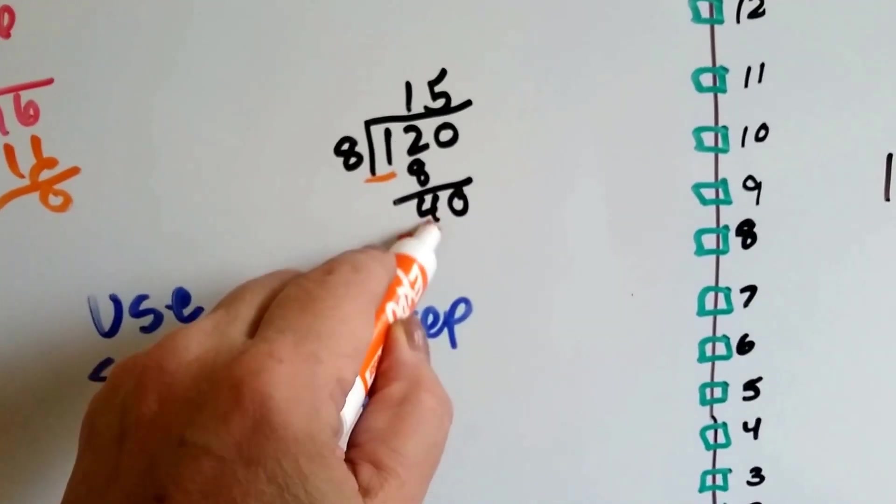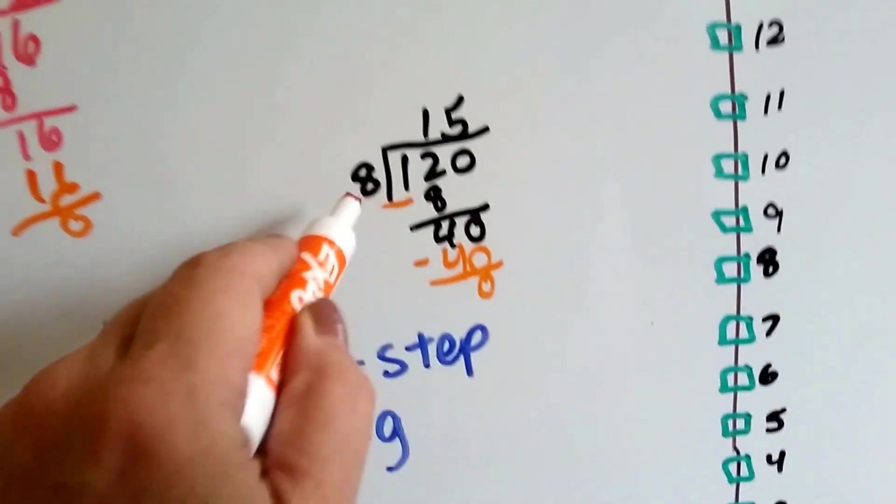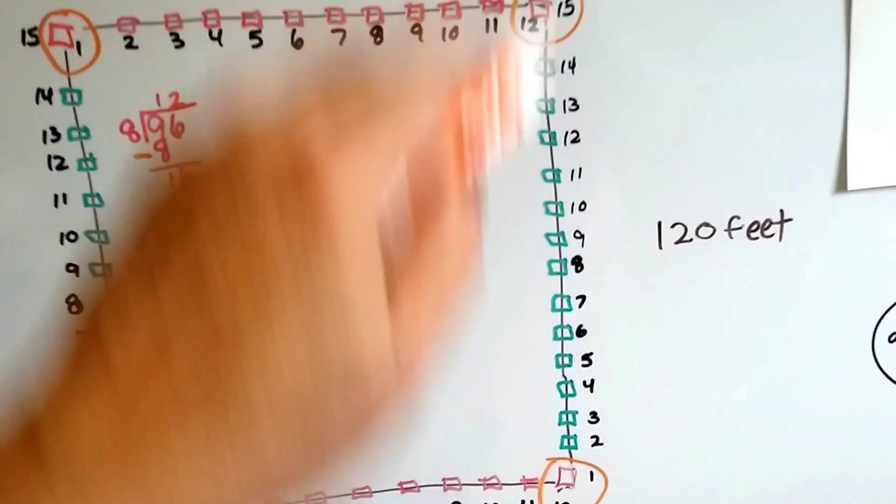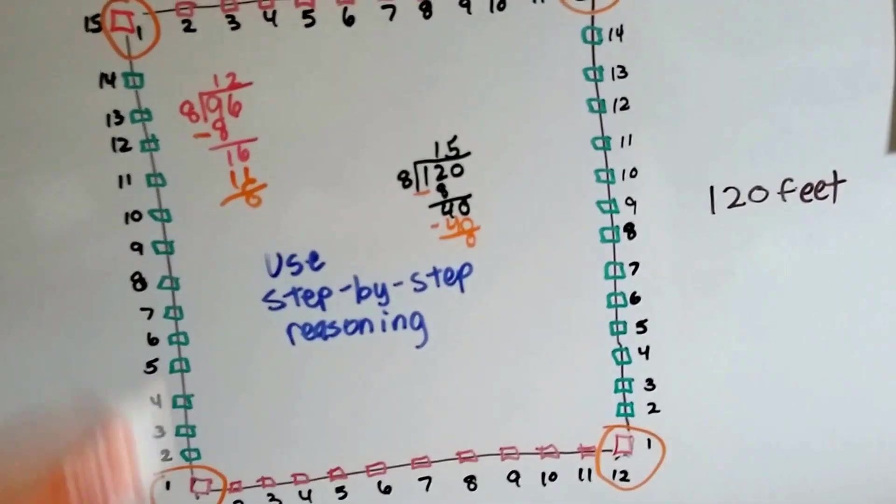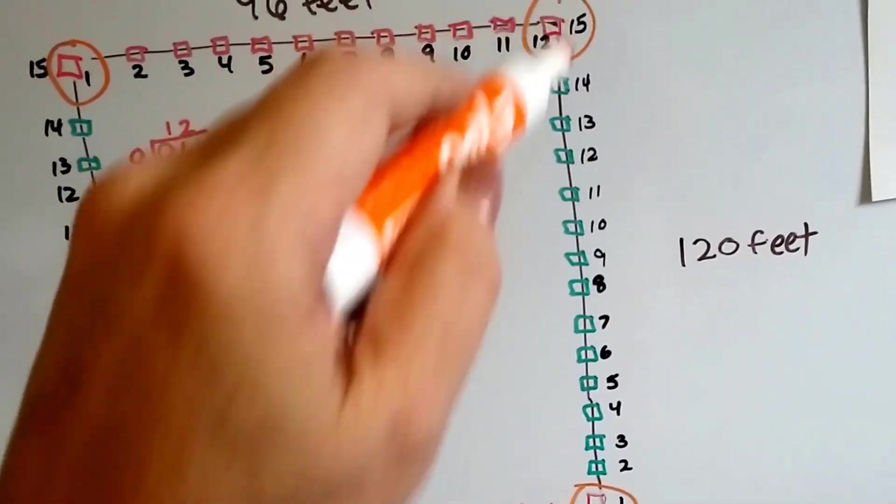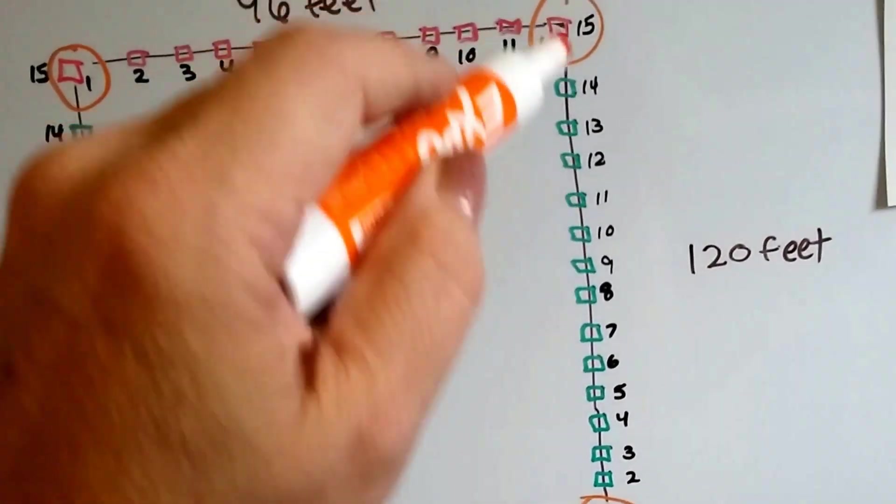I do my subtraction. I get a zero. So, it goes in fifteen times. So, I need fifteen fence posts on this side and fifteen on this side. But, there's already one here because of the corner.